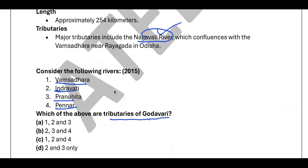Since we know that Vamsadhara is an independent river and not a tributary of the Godavari, we can immediately eliminate options that include Vamsadhara. This eliminates one option and makes it easier to arrive at the correct answer. Please comment the answer in the comment section. The PDF will be provided in the Telegram channel.